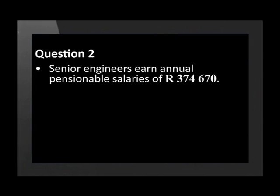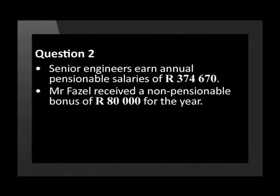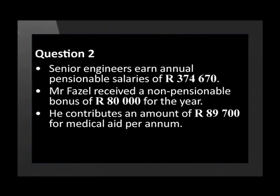The senior engineers at Delta Engineering earn annual pensionable salaries of 374,670 Rand, with bonuses usually calculated according to the productivity of the business. Mr. Faisal is one of the directors and he received a non-pensionable bonus of 80,000 Rand for the year. He is married and has three children who are all members of his medical aid. He contributes an amount of 89,700 Rand for medical aid per annum.